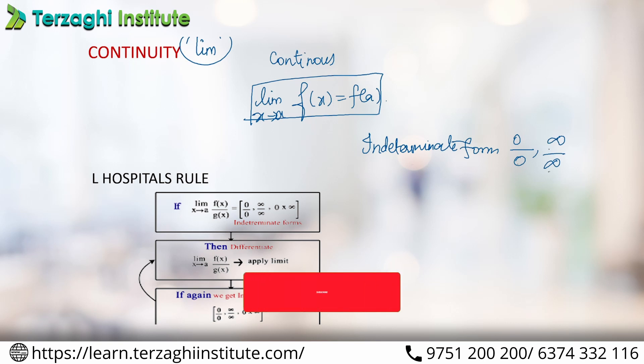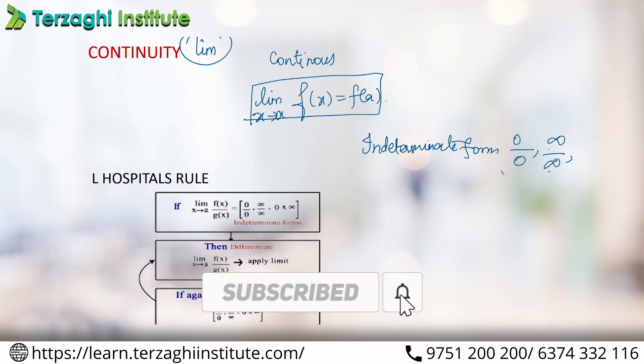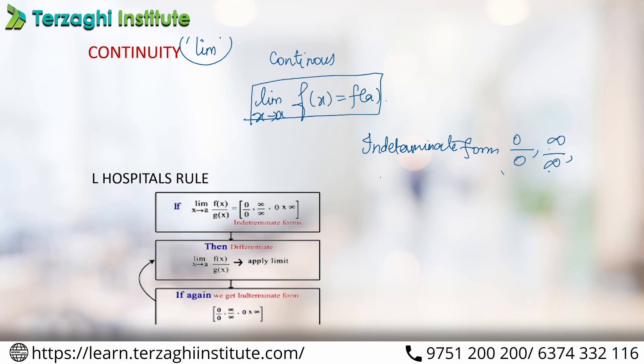Indeterminate forms include 0/0 or infinity/infinity. If we encounter this form, we can use L'Hôpital's Rule. L'Hôpital's Rule helps us solve the value when we have the first indeterminate form.